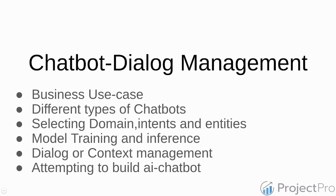For this project, we will first select a domain, then select the intents and entities, define them, train the model, and then try to use dialogue or context management. The context manager holds the intents and entities — think of it like a box. Whenever you want, you go to the box and ask what product name was I asking for, and it gives you that. We will be using some sort of database for that.